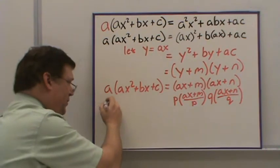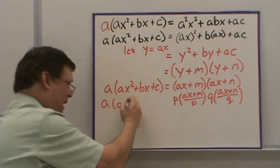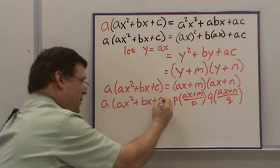And this is still going to be equal to A times AX squared plus BX plus C.